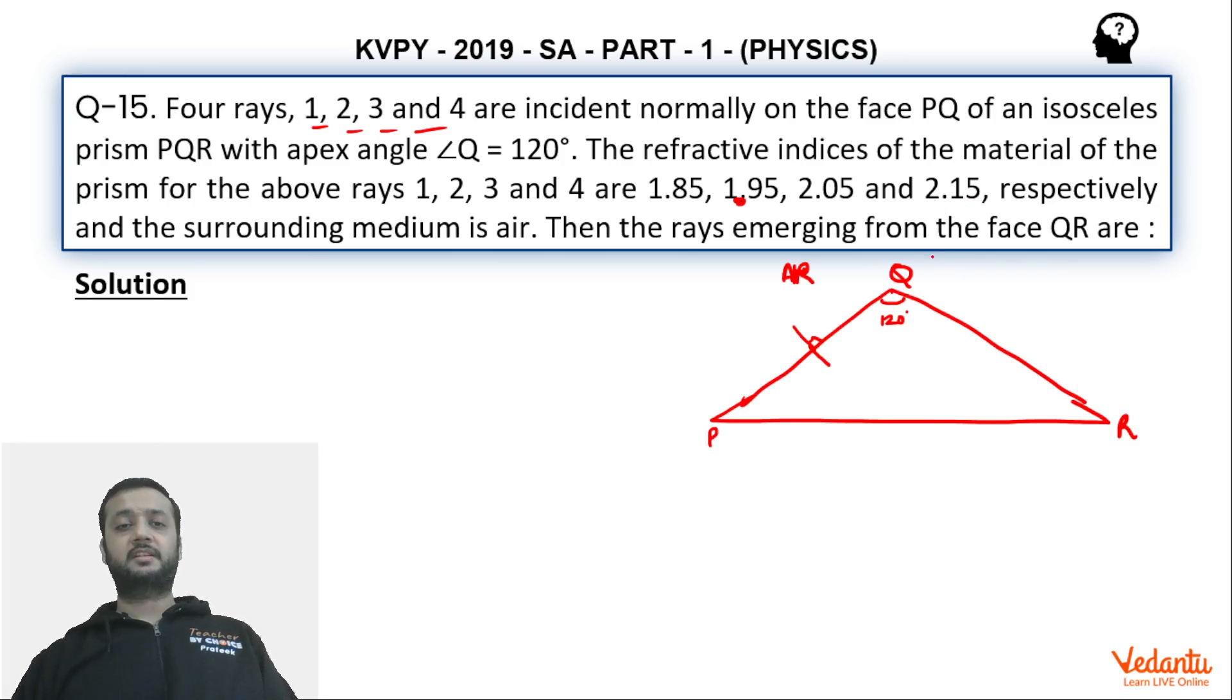We have to find that which ray amongst the given 1, 2, 3, 4 will emerge from the face QR. That means which of the rays will be coming from QR, will come out from the face QR. This is what we have to find.